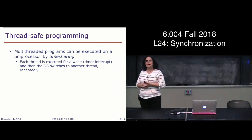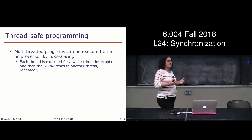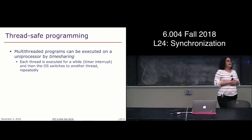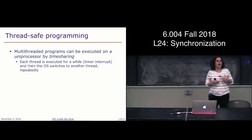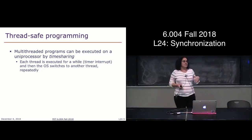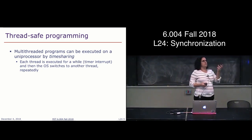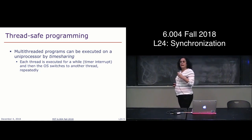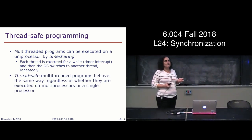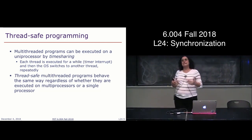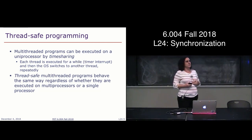What does it mean to be thread safe? You can think of multi-threaded programs as if running on a single processor — the operating system would be responsible for time sharing between threads, and you'd expect a particular output. When we talk about thread-safe programming, we say that even if multiple processes are operating in parallel, we expect the output of the program to be exactly the same as if executing it on a uniprocessor.